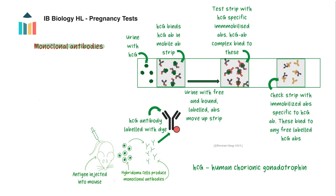When a woman is pregnant, HCG is present in her urine. When the test stick is dipped into the urine, the labelled monoclonal antibodies in the mobile antibody area here will bind to any HCG present, forming an HCG antibody complex.